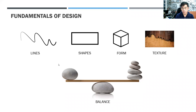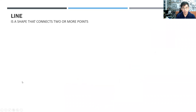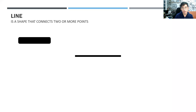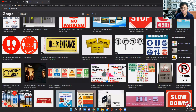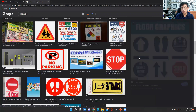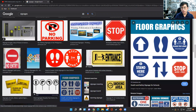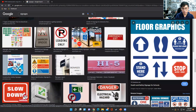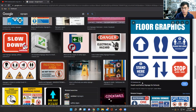A line is a shape that connects two or more points. In designs you'll notice that lines have different weights — some are thick, some are medium, and some are thin. As an example, lines used in signs can serve as dividers. So the lines you use are also important.